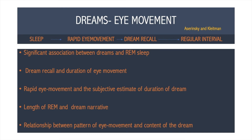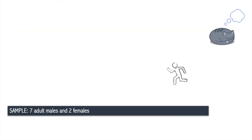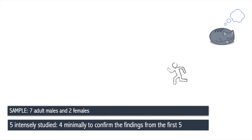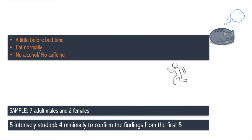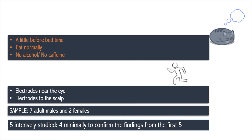Regarding the sample, there were seven adult males and two females. Out of these, five were intensely studied while the other four were used to confirm the findings from those five. The subjects came to the lab a little before their bedtime. They ate normally but abstained from alcohol or caffeine all day. Electrodes were attached near their eyes to monitor eye movement, and similar electrodes on the scalp to monitor brain activity. Once this was done, subjects went into a quiet, dark room and slept with these electrodes while their brain activities were monitored.